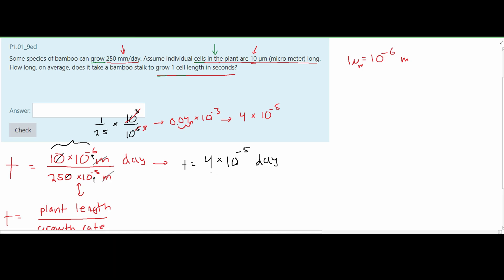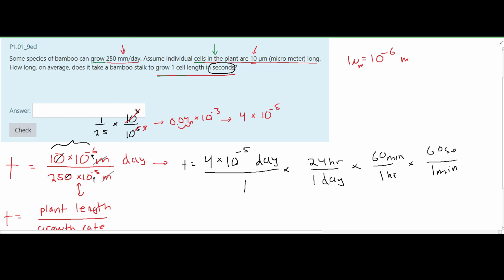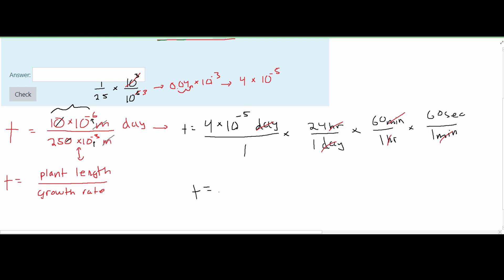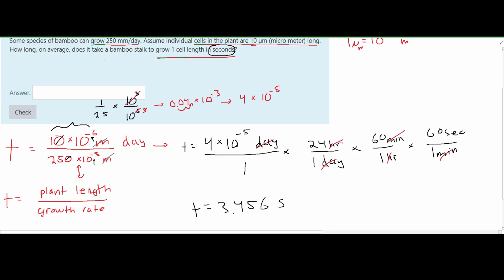The problem asks for the answer in seconds, so we have to convert days into seconds. We know 1 day equals 24 hours, 1 hour equals 60 minutes, and 1 minute equals 60 seconds. We cancel out the days, hours, and minutes, leaving us with 4 times 10 to the negative 5 times 24 times 60 times 60. This gives t equals 3.456 seconds — that is the answer to this problem.